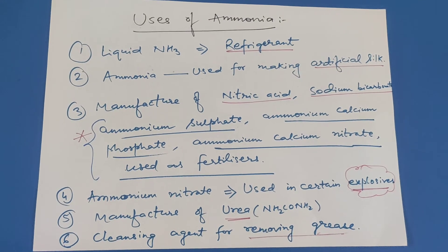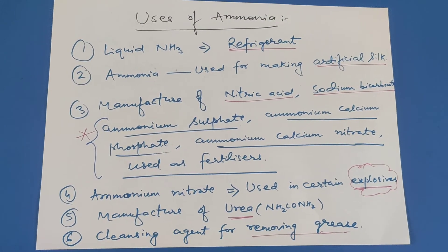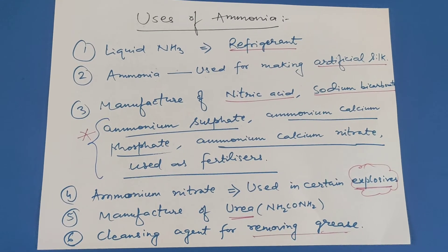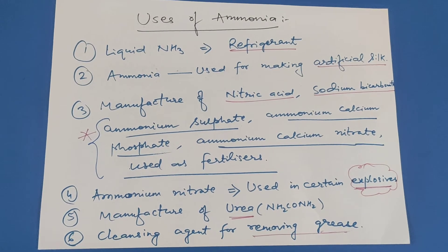Ammonium nitrate is used in certain explosives. Ammonia is also used to manufacture urea, which is a very good fertilizer. And ammonia is also used as a cleaning agent for removing grease.